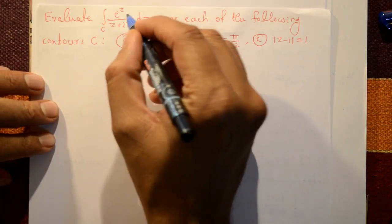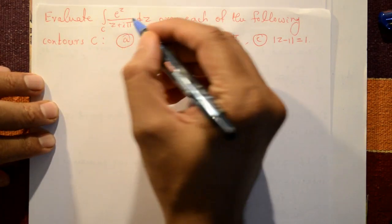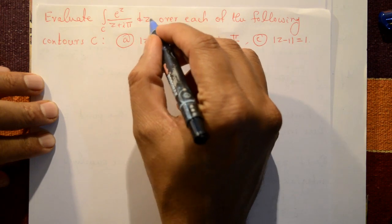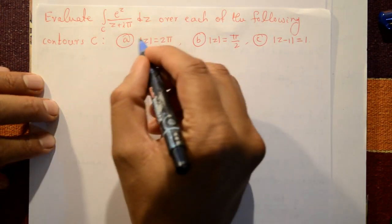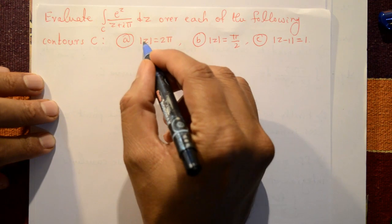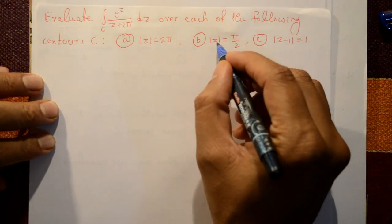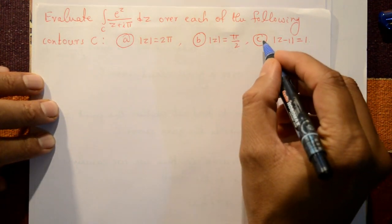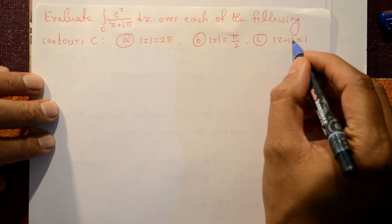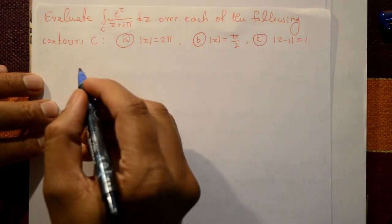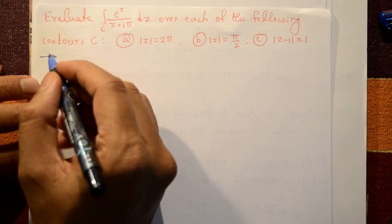Evaluate the integration of eᶻ/(z + iφ) with respect to z over each of the following contours: first, |z| = 2π; second, |z| = π/2; third, |z - 1| = 1.